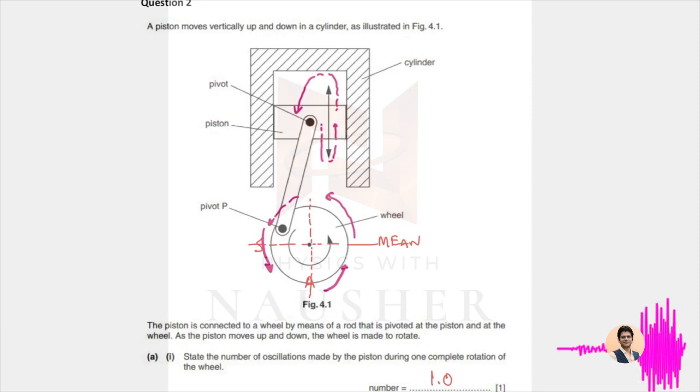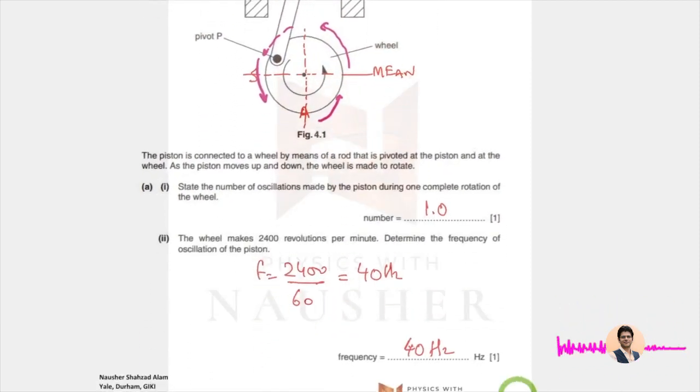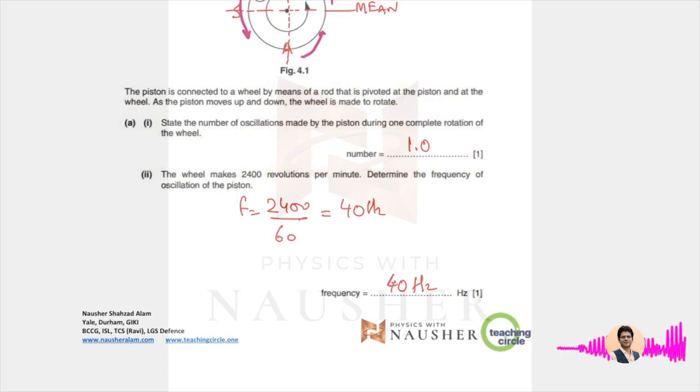Now, next part, what is the frequency? Frequency, you have 2400 revolutions per minute, so per second 40 is the answer. And you do not need to write hertz with it. The reason is that hertz is already printed, so let me remove it.